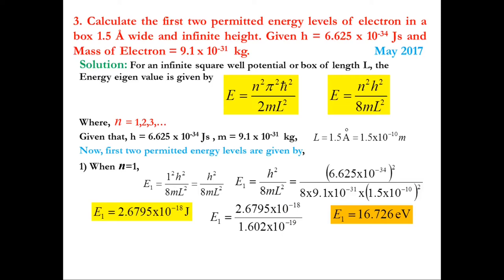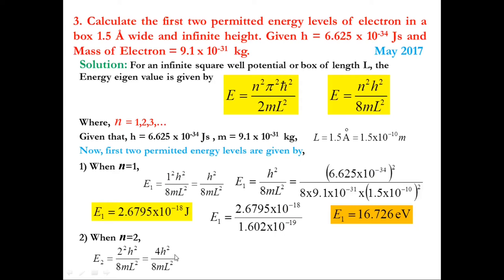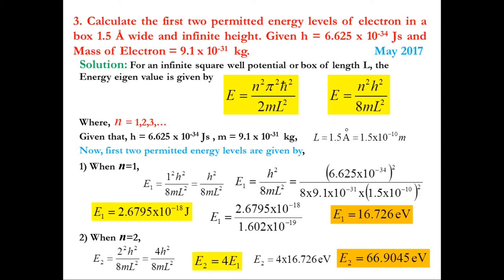For n = 2, E₂ = 4h²/(8mL²) = 4E₁. Therefore E₂ = 4 × 16.726 = 66.9045 eV. These are the first two permitted energy levels of an electron in a one-dimensional infinite square well potential of width 1.5 angstrom.